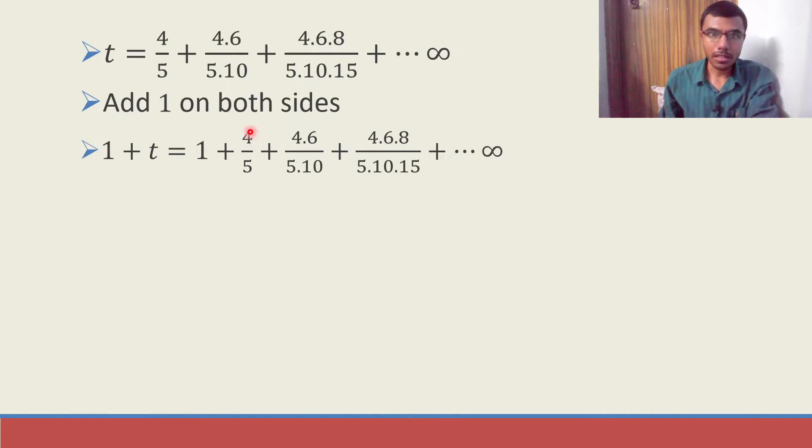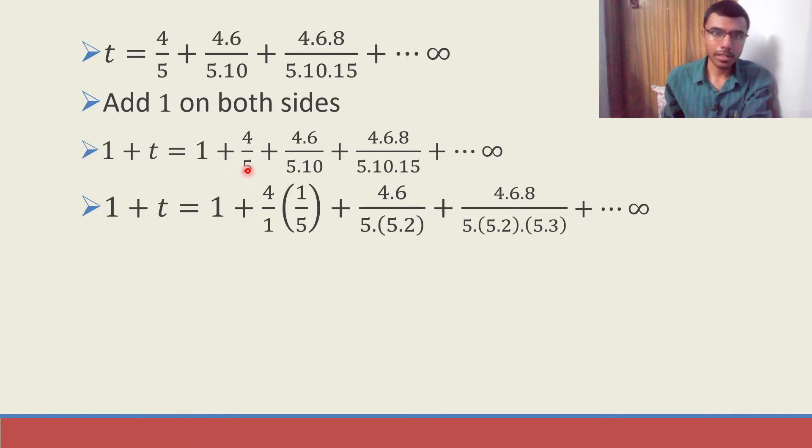See this 4/5. This 4/5 I'm going to write it as 4/1 times 1/5. I wrote it as 4/1 times 1/5. Now next you might feel because there is one 5 here. Here there is 5 times 10. 10 is nothing but 5 times 2. So basically 5 times 5 I'll get something like 5 squared here.